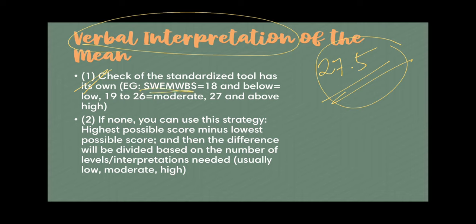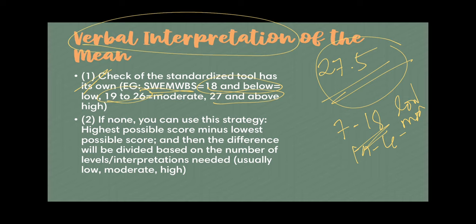For example, if the score is 17 to 18, then that is going to be low. If it's 19 to 26, then that is moderate. If it's 27 to 35, then that is going to be high. We didn't really make those verbal interpretation ranges of scores ourselves — it's something already prescribed by the maker of those tools. However, if you are the one who made the questionnaire, or if the questionnaire's developer does not identify ranges or cutoffs, then you can be the one to make your verbal interpretation.